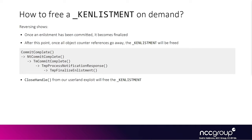In this video, we're going to try to answer the question: how do you actually free the enlistment on demand? You figure that out through reversing. There is a function called tmp-finalized-enlistment, which ends up setting the finalized flag and it drops the ref count. Through reversing, you can figure out that this function is called in the kernel when calling the commit-complete API from user-land.